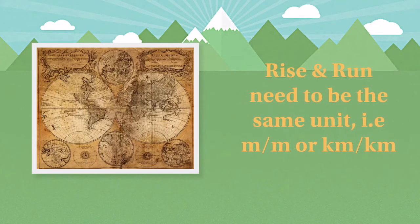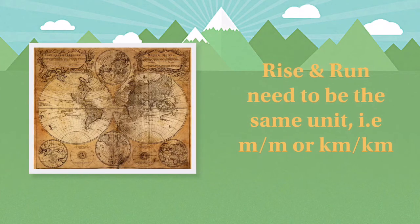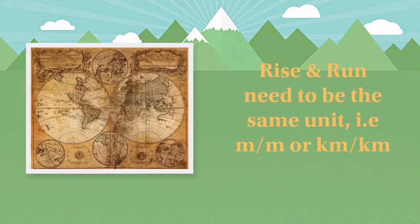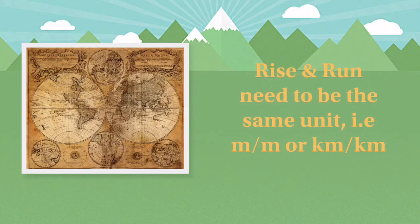The biggest mistake people make is not having rise and run as the same unit, i.e. metres and metres or kilometres and kilometres. You've got to convert and that means maths.